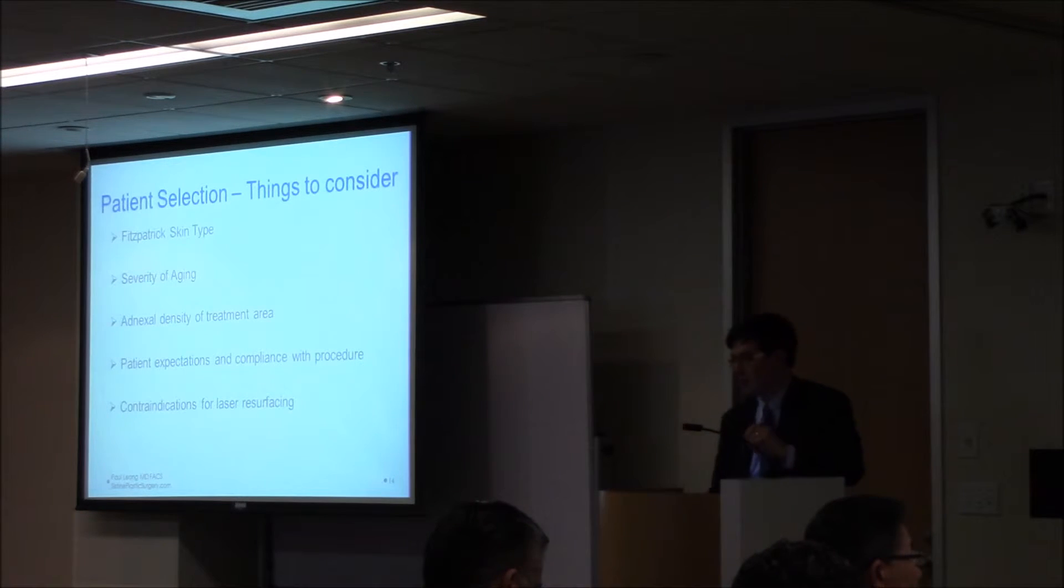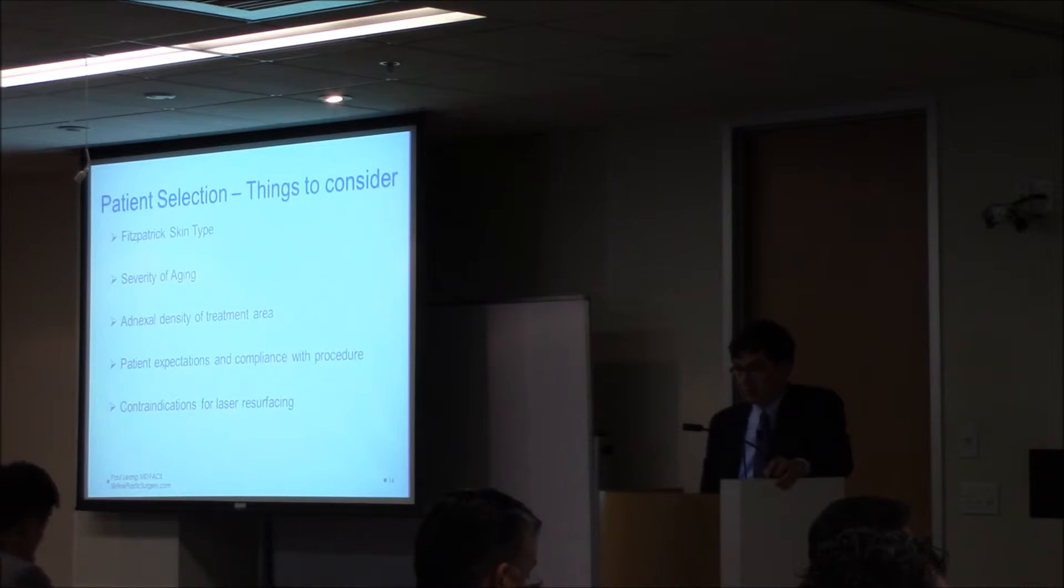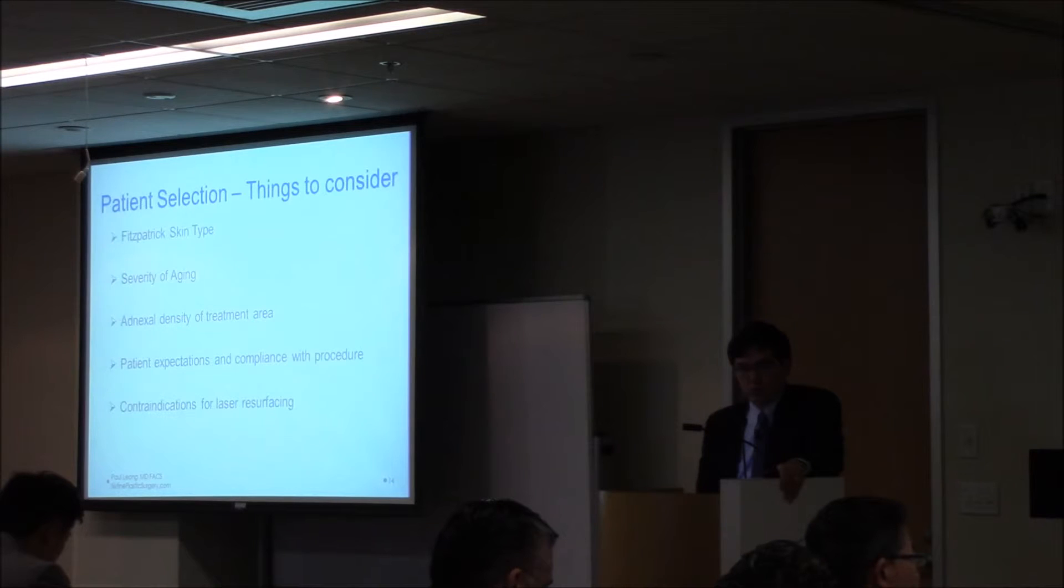Patient selection: you're looking at Fitzpatrick skin type, severity of aging, adnexial density. Has this patient had radiation therapy? Patient expectations: we find our patients, unlike some of the other devices we use, are overwhelmingly happy. Having said that, we put a fair amount of time into managing patients' expectations. We tell them we're not going to get this skin as smooth as a baby's bottom at all. We're trying to get a meaningful, measurable, obvious improvement - like their neighbor two doors down will look at them and immediately see it. We think we can deliver those results fairly consistently.